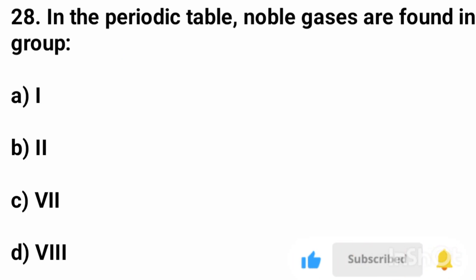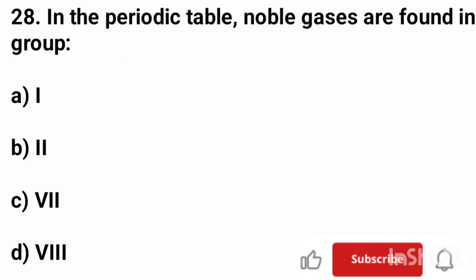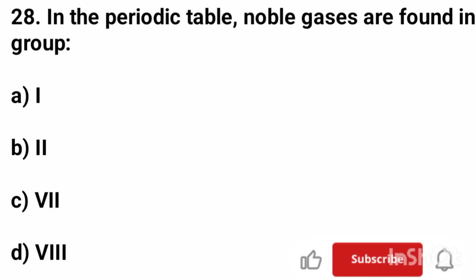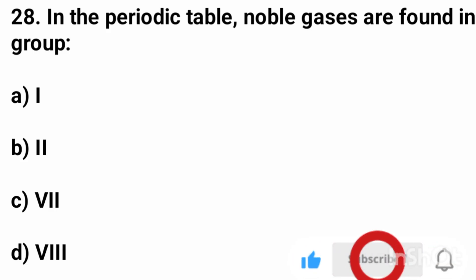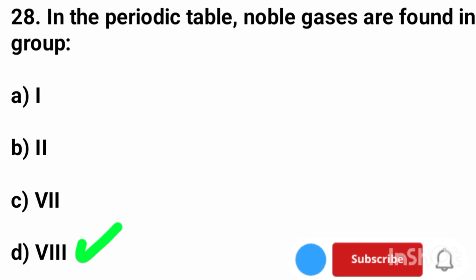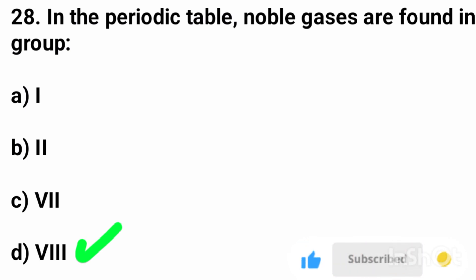Question number 28. In the periodic table, noble gases are found in group? The correct answer is option D, 18.